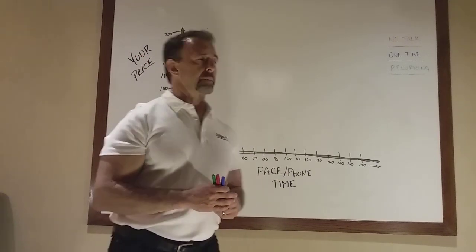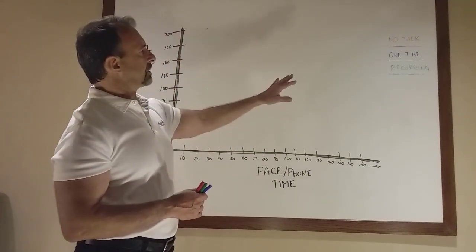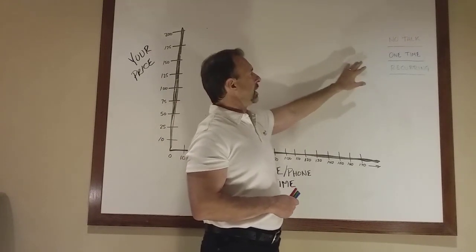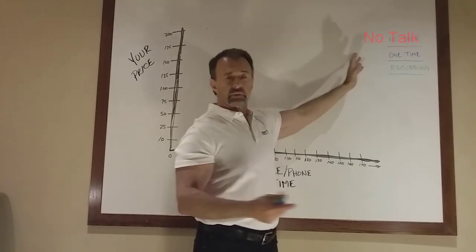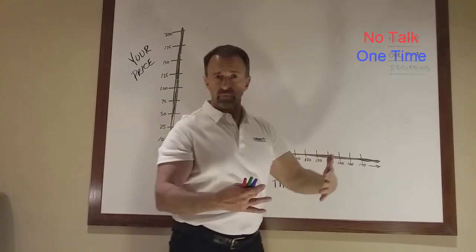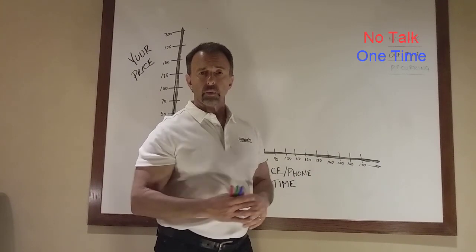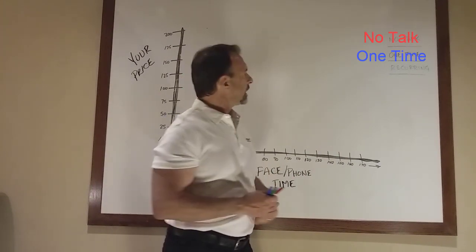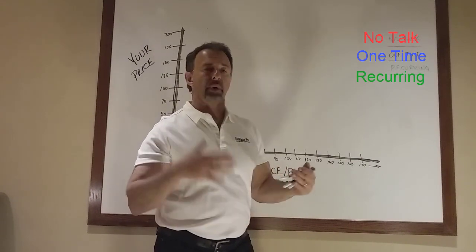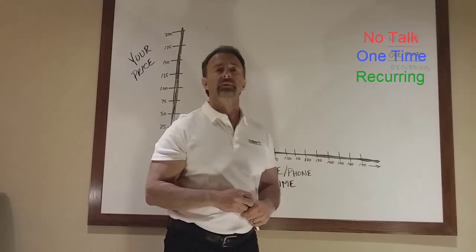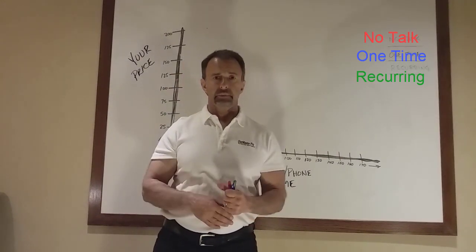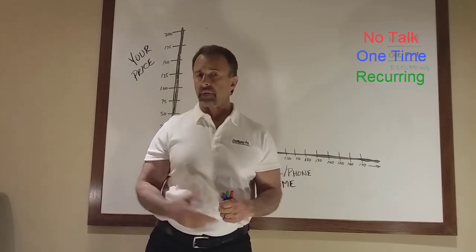We're going to segment these up into three areas. We call them: no talk, which is non-human intervention; one time, where maybe there's a kickoff or initial consult where you collect information; and then there's the recurring, where you're setting up follow-up appointments and working with clients on a repeat basis to keep them motivated and accountable.